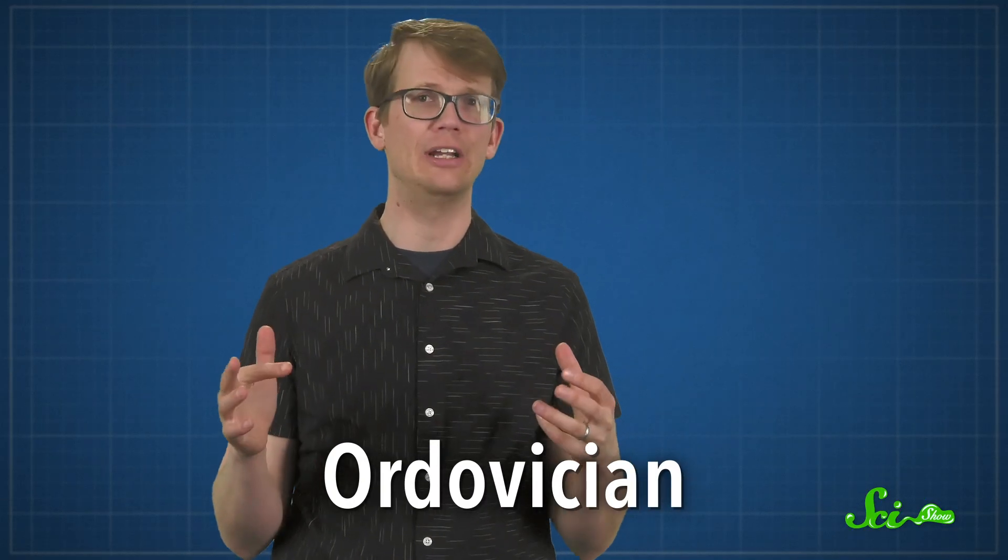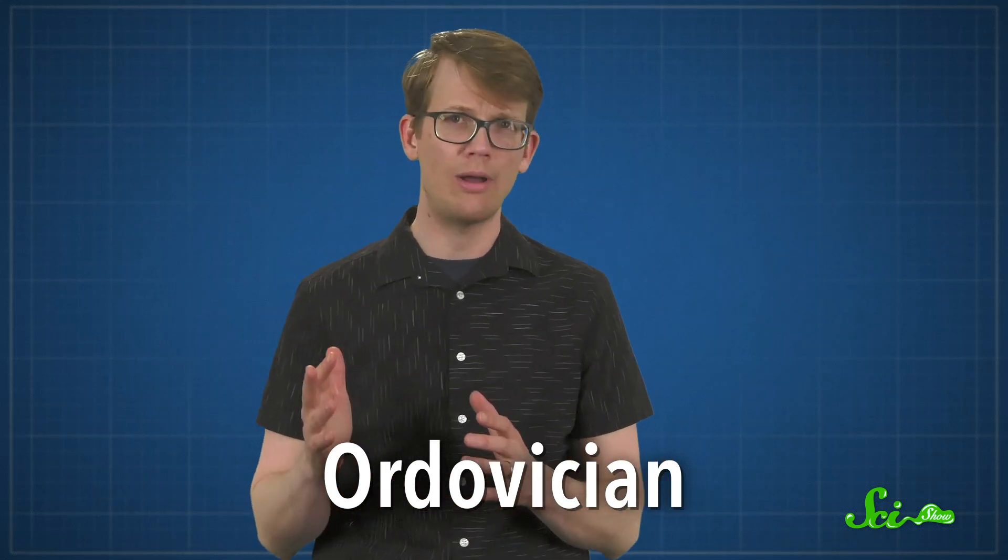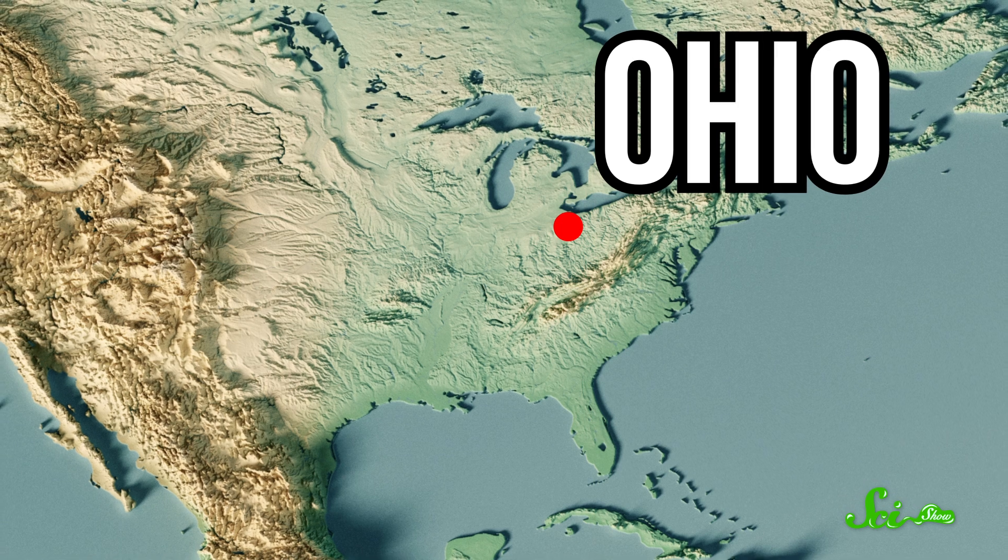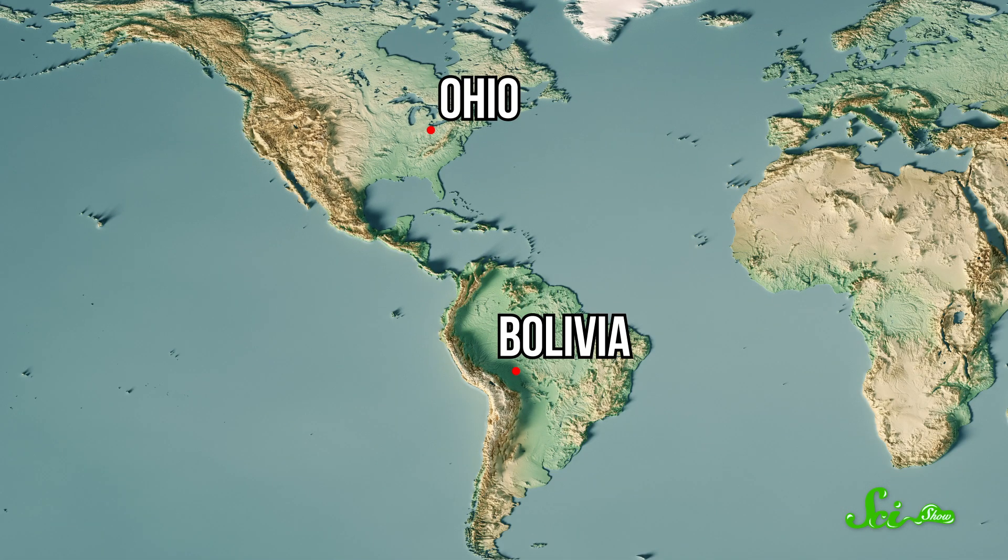This was Earth during the Ordovician Period, a geologic period that ran from about 488 to about 443 million years ago. During this period, Ohio was somewhere around the same latitude as modern-day Bolivia, and it, along with most of the middle of North America, was covered in a shallow, stormy sea about 20 meters deep.